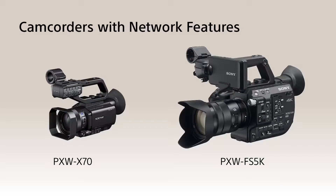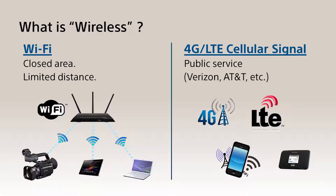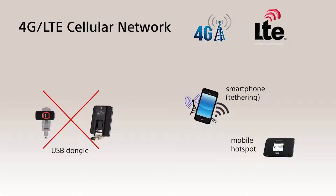In this tutorial video, we will explain the network features of the PXW-X70 and PXW-FS5. These two models have the exact same wireless features in terms of file transfer and live streaming. The type of wireless technology these cameras have is Wi-Fi, and it will require a Wi-Fi router to get network access. There is another wireless network interface you can use, which is the 4G LTE, via a mobile hotspot or a smartphone which has the tethering function activated.